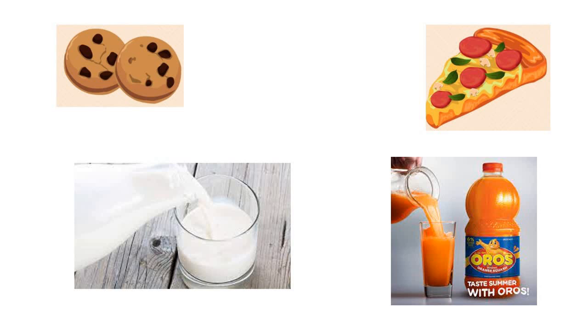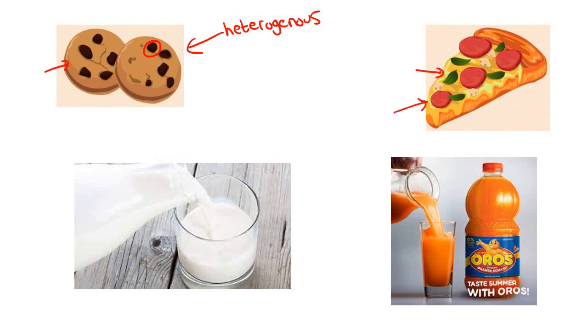With these, you need to determine if they are homogeneous or heterogeneous. For the first one — the biscuits — can you see different parts or does it all look the same? You can see chocolate chips and the normal biscuit part, so because there are different parts, that would be heterogeneous. Let's look at this pizza — you can definitely see different parts: there's pepperoni, there's some cheese. So that would also be heterogeneous.